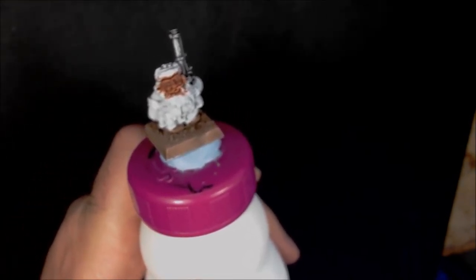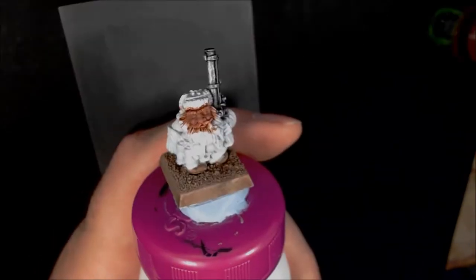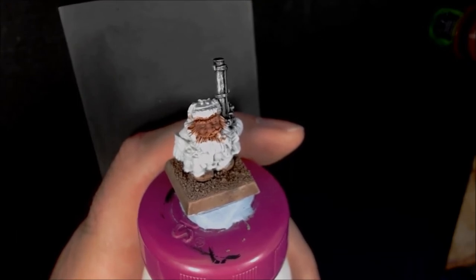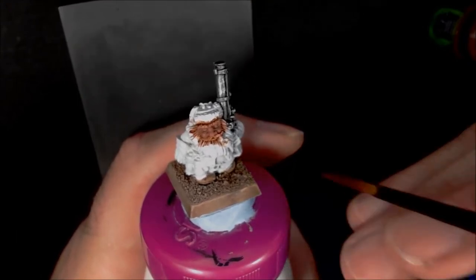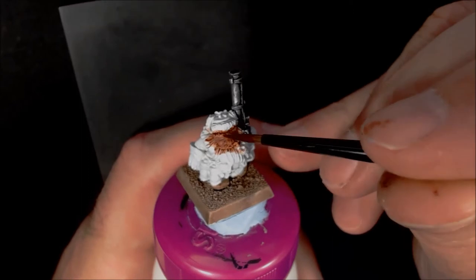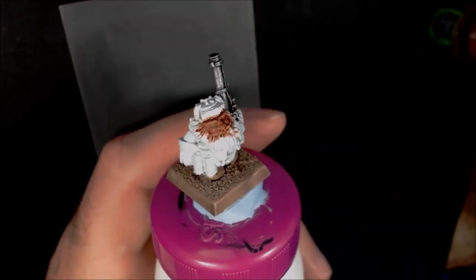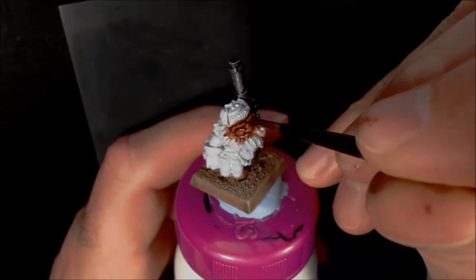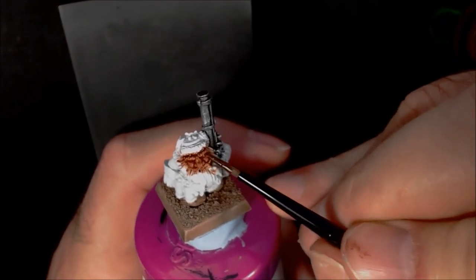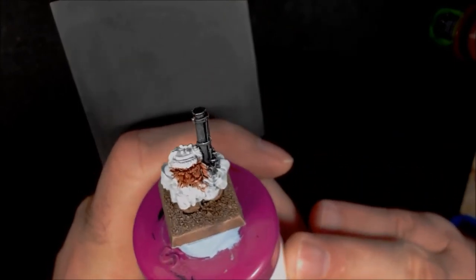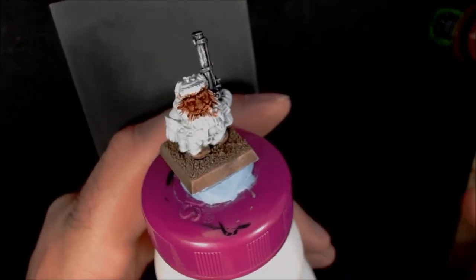What I've done already is apply Bugman's Glow, and we'll go straight to the shade now. So Reikland Flesh straight out the pot. I'm using a Citadel base brush purely because I don't want to use any of my nice brushes. I've had this brush a while but it's still got a point on it. You don't really need a point for putting washes on. It's got a thick body to the brush on this one. This is about the size of a two Windsor and Newton. I'm going to leave that settle in the recesses and we'll come back when it's dry.